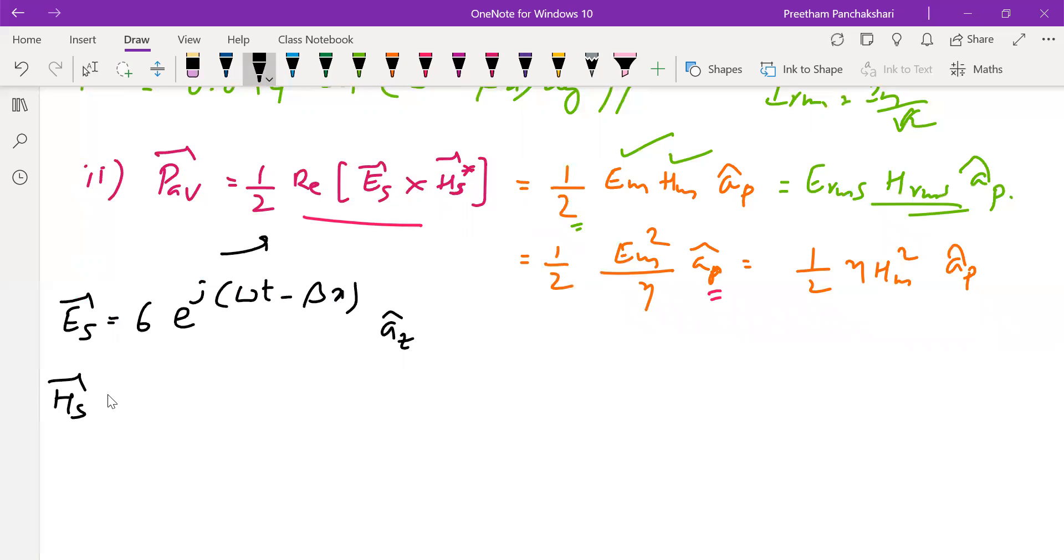Now we shall also find H in complex form. Amplitude can be taken as 6/377. And then the direction of H to be calculated using this Poynting vector equation.